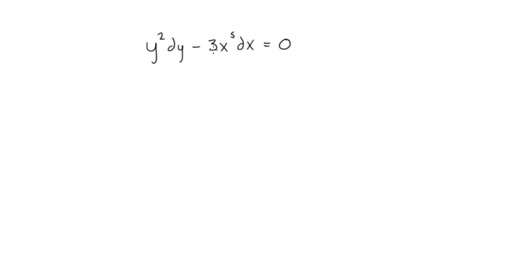Hopefully you can recognize that this is a separable differential equation. We have one term that's just a function of y with a dy on it, and another term that's just a function of x with dx, and it's all equal to 0. So all we need to do is bring this 3x to the fifth over to the right hand side.